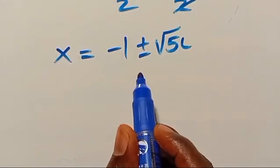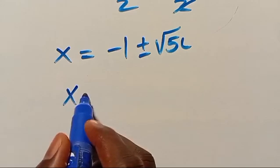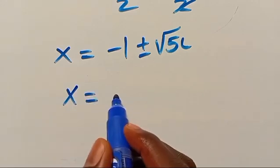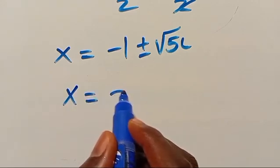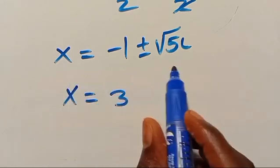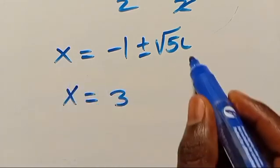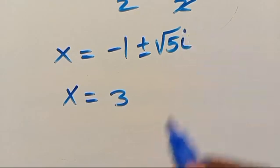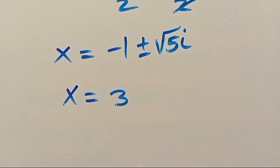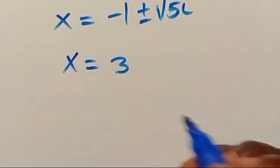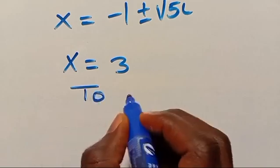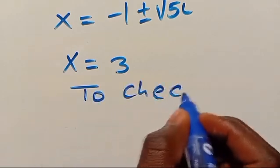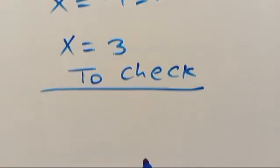So from here we have x equals 3 as the real solution, and x equals minus 1 plus or minus root 5 i as the complex solutions. We're new here — once again, don't forget to share, like, comment, and subscribe to our YouTube channel for more math tutorial videos.